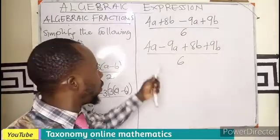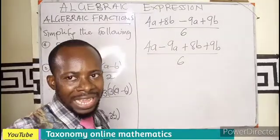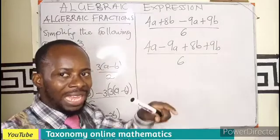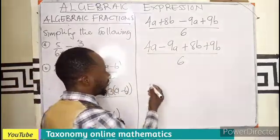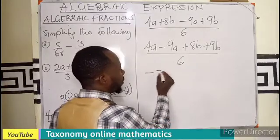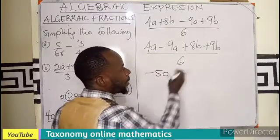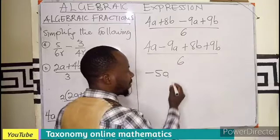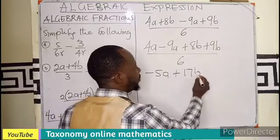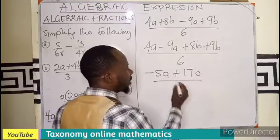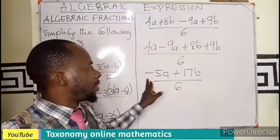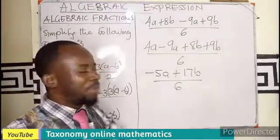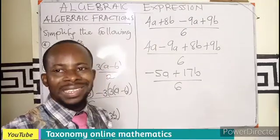As a, a being branded, so 4 minus 9, 4 being smaller than 9, we can't take away 9 from 4, so we get a negative value. So we have negative 5a, 8 plus this will give us plus 17b all over what? 6. So our answer is this, minus 5a plus 17b over what? 6.